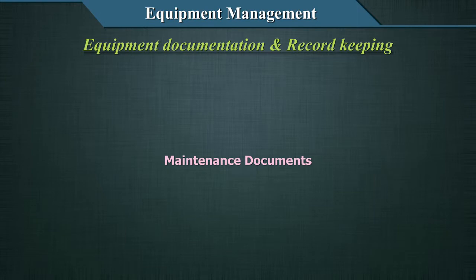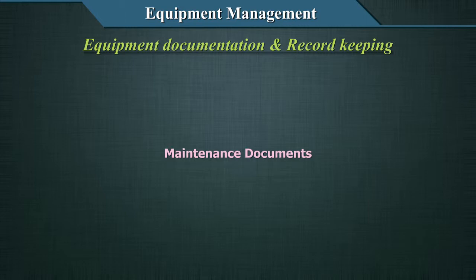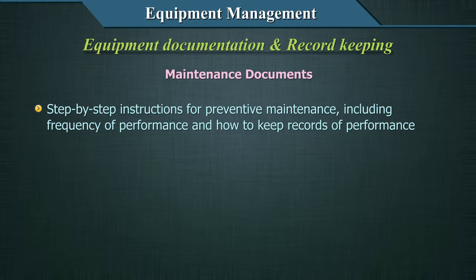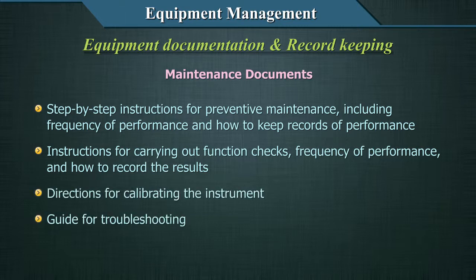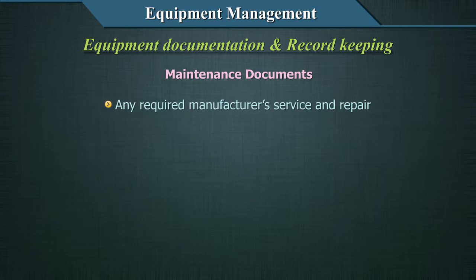Regarding maintenance documents and records: documents are instructions for how to do an activity, and records are captured evidence of that activity. Maintenance documents should include step-by-step instructions for preventive maintenance, including frequency of performance and how to keep records. This can be part of the equipment SOP, along with instructions for carrying out function checks, frequency of performance, and how to record the results.